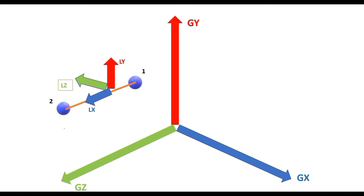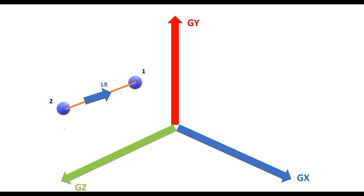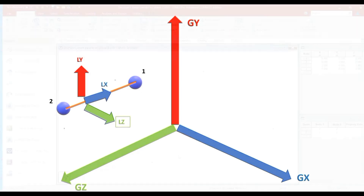However, if the same beam is parallel to the global Z but is created from node 2 to node 1, the local X-axis will point in the opposite direction. The beta-zero configuration is determined by still placing the local Y parallel to the global Y such that the positive direction is the same. As a result of the right-hand thumb rule, the local Z will be parallel to the global X such that the positive directions of local Z and global X are the same.